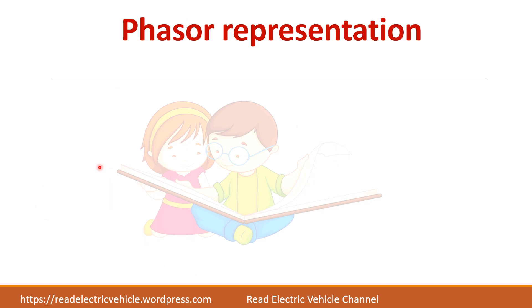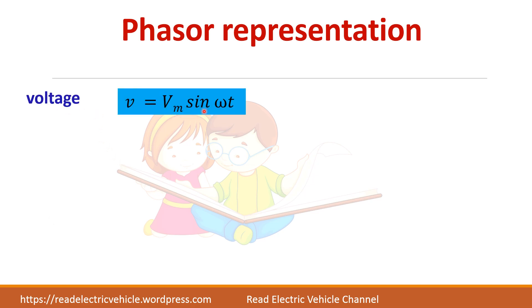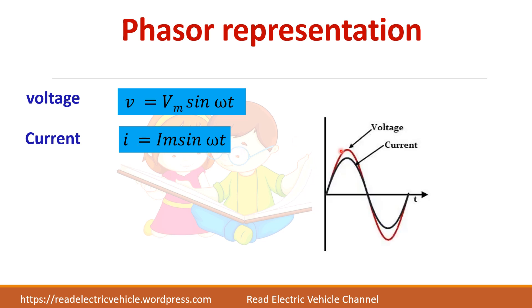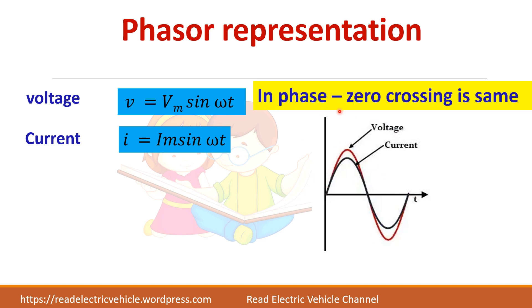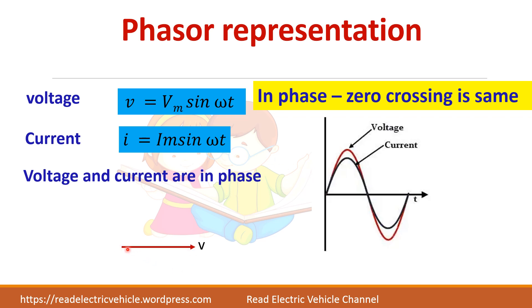Next we will see how to represent the voltage and current. V = Vm sin(ωt) and I = Im sin(ωt). Both are sin(ωt), so the waveform is the same — they are said to be in phase. In the phase diagram, taking voltage as reference, current will also be in the same line because there is no angle difference between the two waveforms. Since the current's magnitude is less, it is drawn as a shorter line.